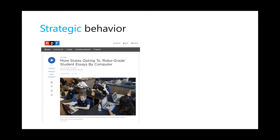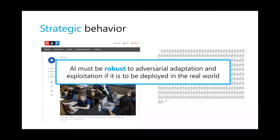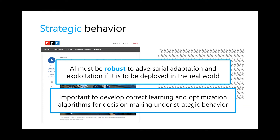Of course students had incentives to get the best grade, and people started playing with these robot grading systems until someone found that a long string of 'b's would score the maximum, making the whole AI system completely useless. This is a good illustration of why AI must be robust to adversarial adaptation when deployed in the real world — and therefore why it's important to develop good learning and optimization algorithms for decision making that can reason about strategic behavior.